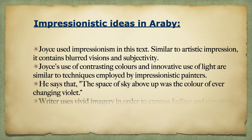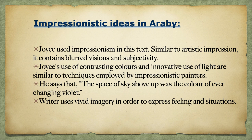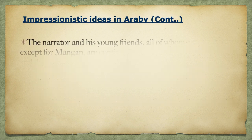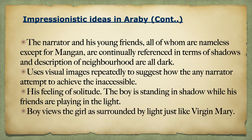Joyce used Impressionism in Araby. Similar to artistic impression, it contains blurred visions and subjectivity. Joyce's use of contrasting colours and innovative use of light are similar to techniques employed by Impressionistic painters. He describes 'the space of sky above as the colour of ever-changing violet.' The narrator and his young friends, nameless except for Mangan, are continually referenced in terms of shadows, and descriptions of the neighbourhood are all dark. The boy stands in shadow while his friends play in the light, and he views the girl as surrounded by light, just like the Virgin Mary.